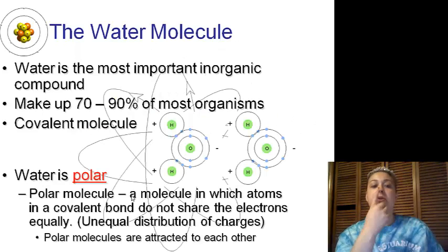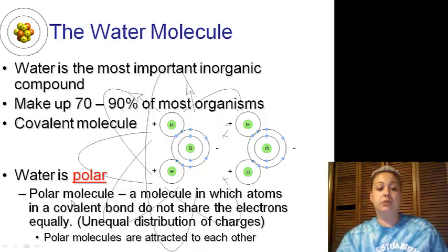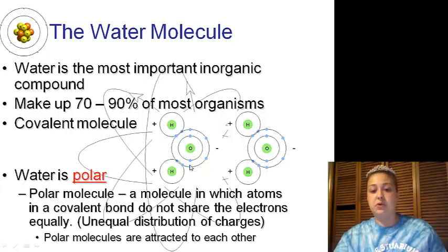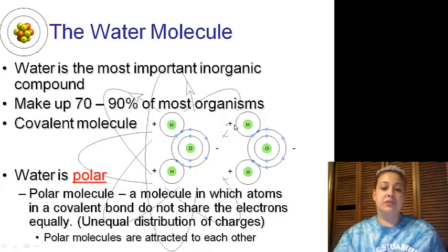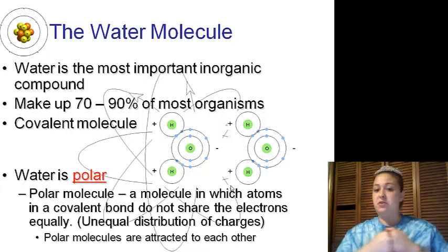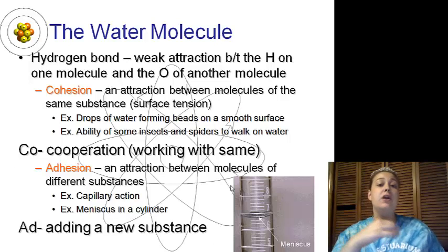Properties of water. Water is the most important inorganic compound, made up of 70 to 90% of all organisms. It is a covalent molecule and it is polar, meaning it has a positive and a negative side. It has covalent bonds that do not share electrons equally, an unequal distribution of charges. The oxygen side has a whole bunch more electrons, making it more negative. There's not many electrons on the hydrogen sides, making them more positive. So we've got a positive side and a negative side of water. This typically attracts other polar molecules. Negative attracts the positive side of water, so they're actually going to come and fit together. The hydrogen bonds are a weak attraction between the hydrogen of one molecule and the oxygen of the other molecule in water.